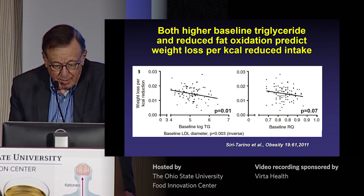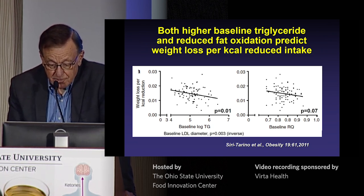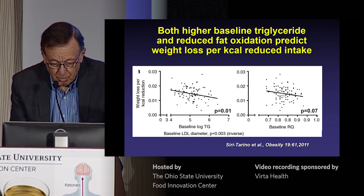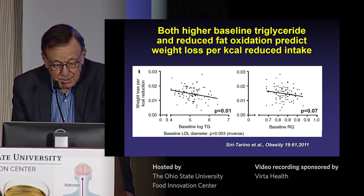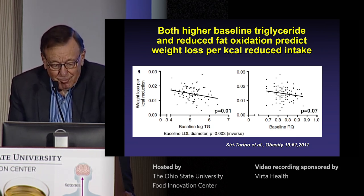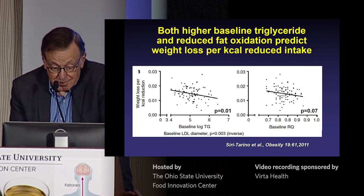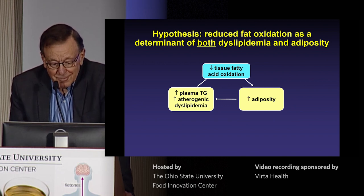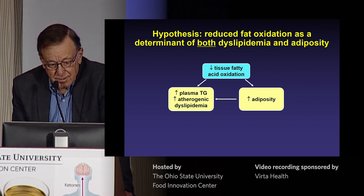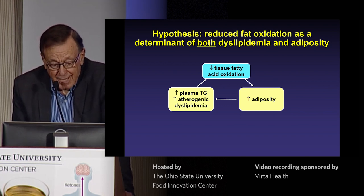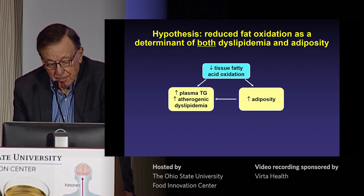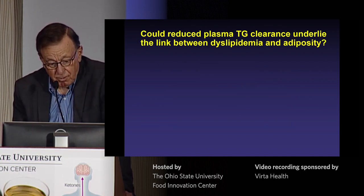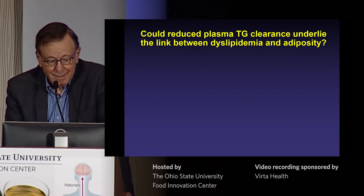We did a second, smaller study in collaboration with George Brooks's group at Berkeley, measuring RQ during exercise, and again triglyceride was linearly related to impaired fat oxidation. We then looked back at our weight loss study to see if baseline triglyceride and baseline respiratory quotient predicted weight loss outcomes — and indeed they did, more strongly for triglyceride and inversely for LDL size. So smaller LDL plus higher triglyceride predicted less weight loss per kilocalorie reduction, independently. This allows me to lead into a speculation we would love to prove.